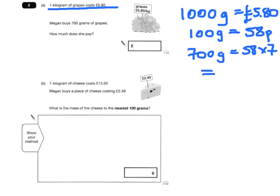If you need a calculator, you're allowed one. But you should be able to do that long multiplication. It works out as 406, so that would be £4.06.